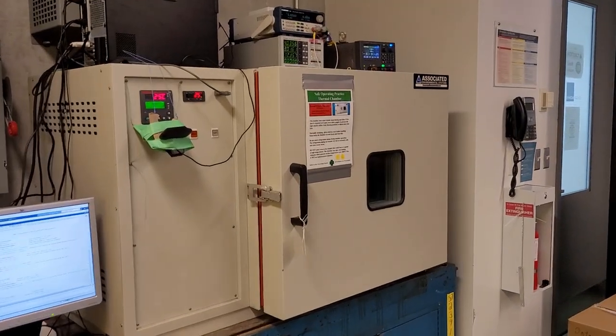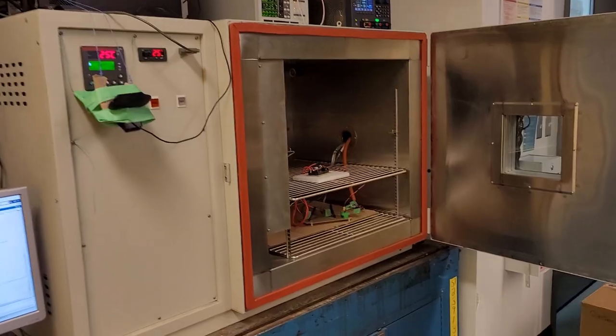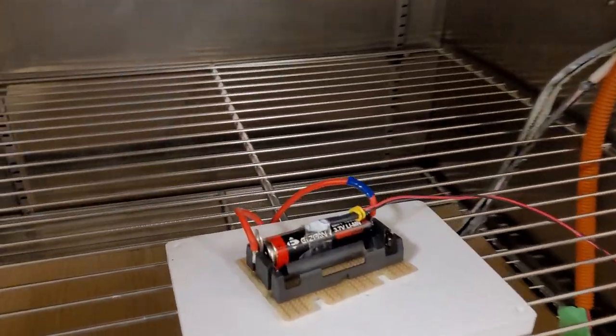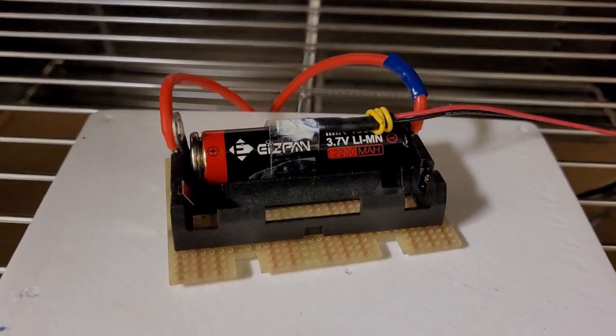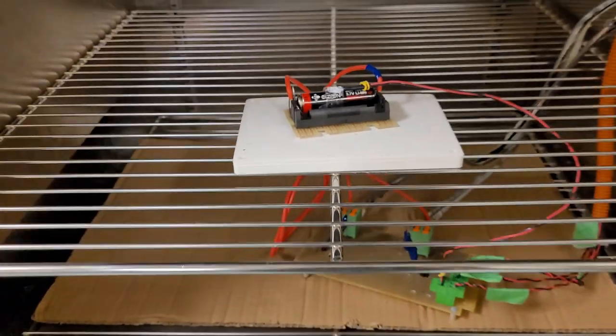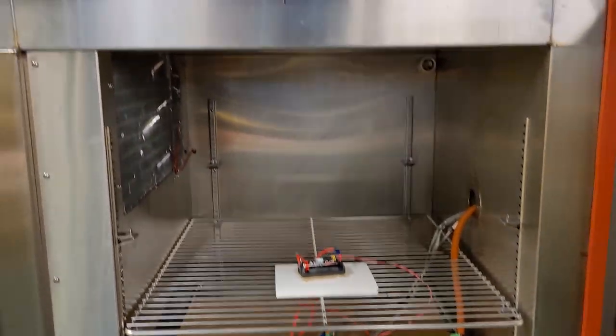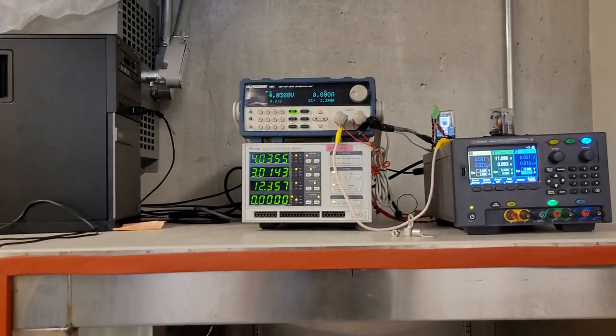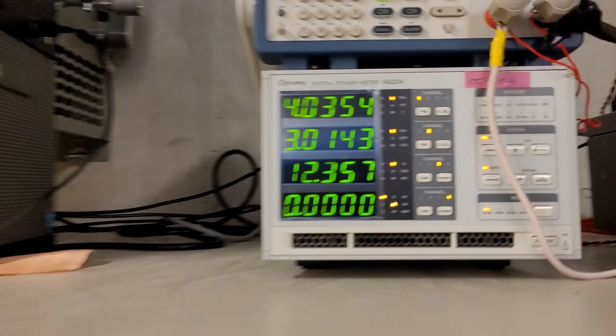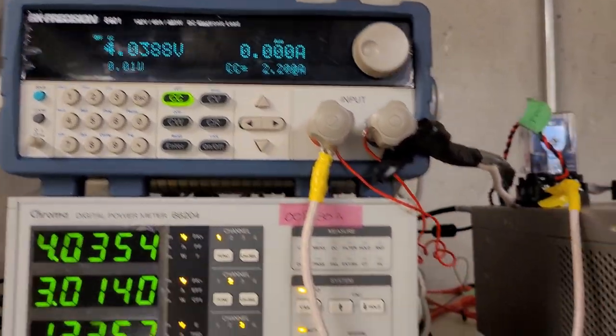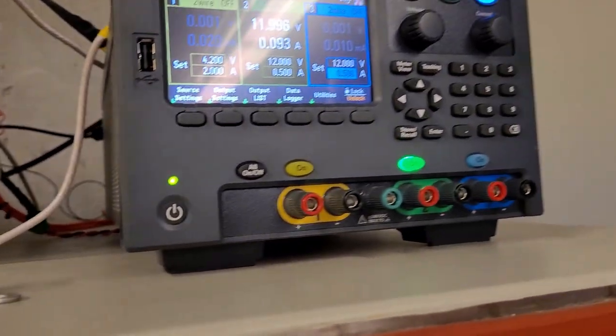This is the setup for battery data collection. Within the thermal chamber, we're able to switch out the battery type. The instruments up here allow us to monitor the battery data, discharge and charge the battery, and a power supply for controlling auxiliary units.